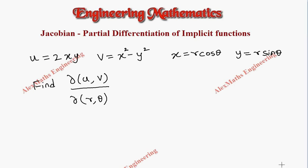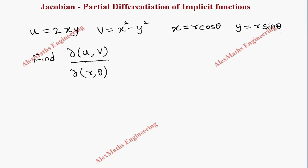Hi students, this is Alex here. In this video we are going to find partial differentiation of an implicit function using the Jacobian method, where u is given in terms of x and y, v is given in terms of x and y, and x is given in terms of r and theta. Similarly, y is also given in terms of r and theta. So now we have to find ∂(u,v)/∂(r,θ).